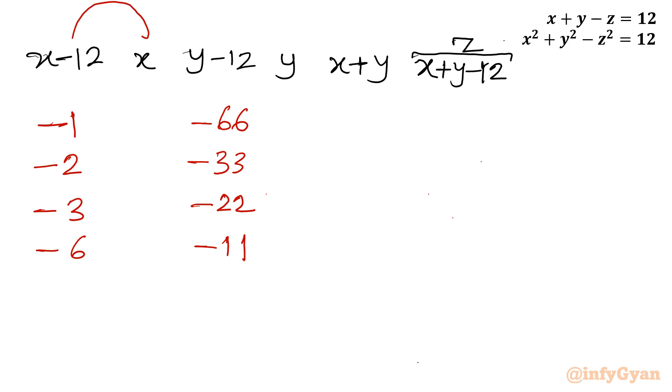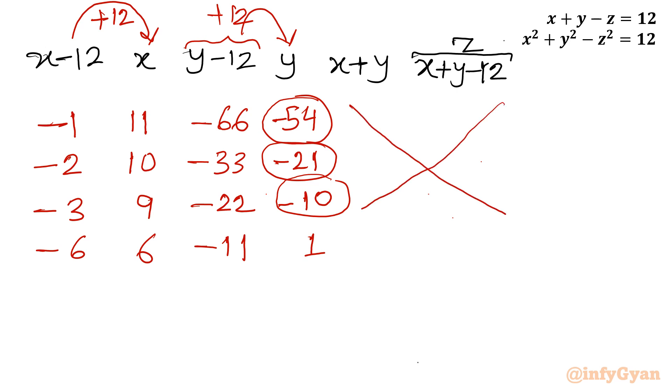Let us find out x from x minus 12 column. So I need to add 12. So 12 minus 1 is 11, 12 minus 2 is 10, 12 minus 3 or minus 3 plus 12 is same as 9, 12 minus 6 is 6. Now come to y minus 12 to y column, add 12. So once I will add 12 to minus 66, it will become minus 54. Here I will be writing minus 21, here I will be writing minus 10, here I will be writing 1. See, all the first three cases I will reject as y is negative. So no need to calculate this value because y is negative and we are looking for positive integer solutions.